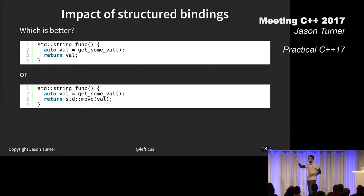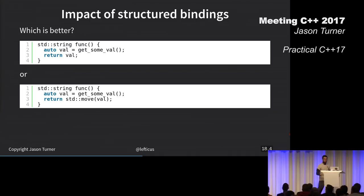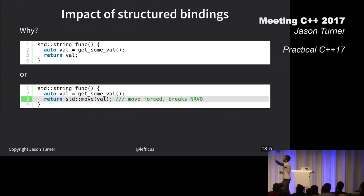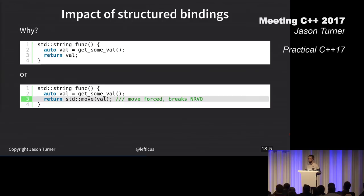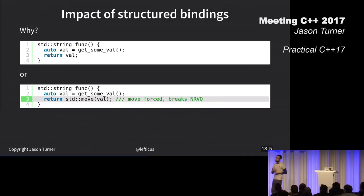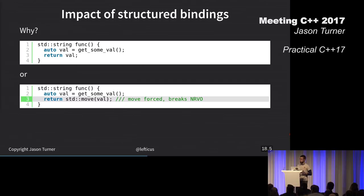The first one is much better because the compiler can optimize it with return value optimization or move elision or copy elision. The second one, we break return value optimization. This generates significantly more code. I don't have the slides to prove that, but I definitely can.